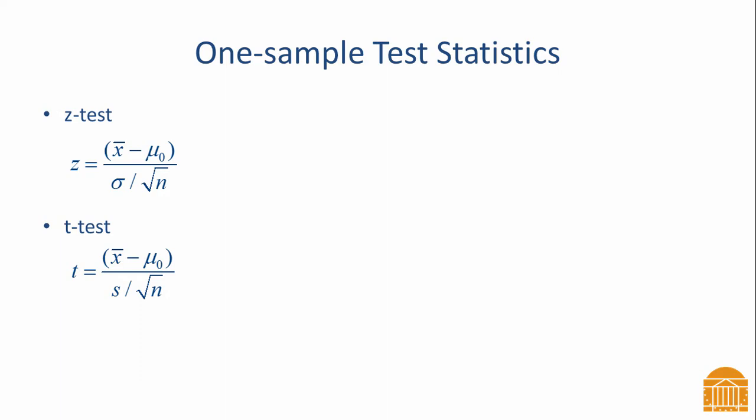There are two possible test statistics that we may use when dealing with one sample problems. The one we select depends on the available information. If we know the population standard deviation, then we use the one sample z-test.